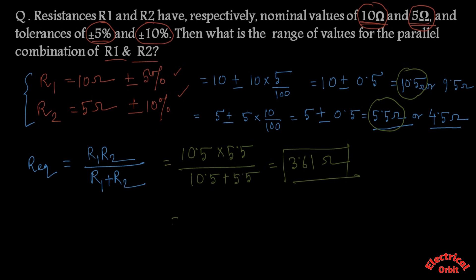Again putting the lower range values of R1 and R2, we get 3.05 ohm. So we are getting a range of 3.61 ohm to 3.05 ohm if we consider the tolerance of 5% and 10% of resistance R1 and R2 respectively.